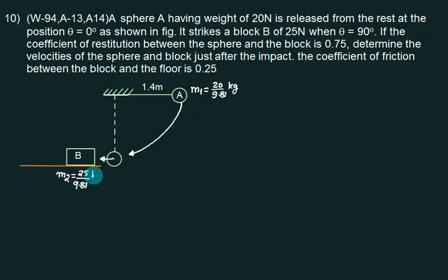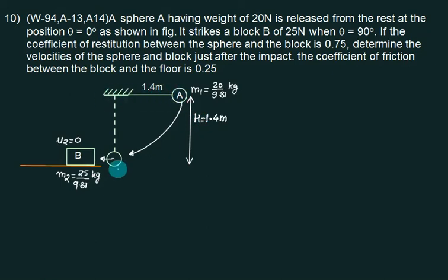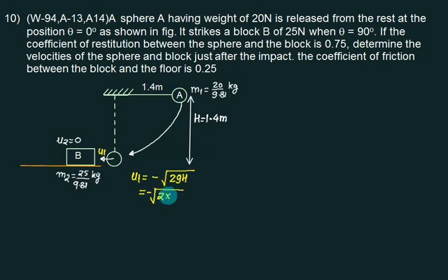As the pendulum swings through, the potential energy changes by h equals 1.4 meters. So the velocity u1 before impact is minus root of 2g times 1.4, that is minus of root(2 × 9.81 × 1.4). The negative sign is because the sphere is moving to the left side. The impact occurs when theta equals 90 degrees.